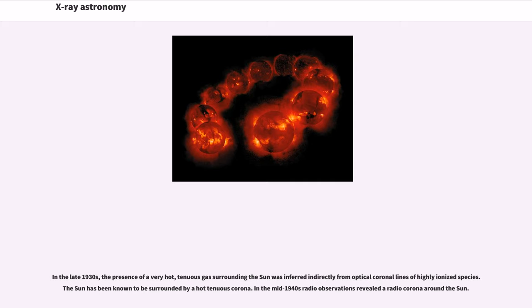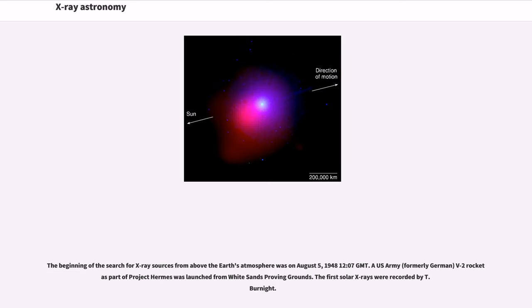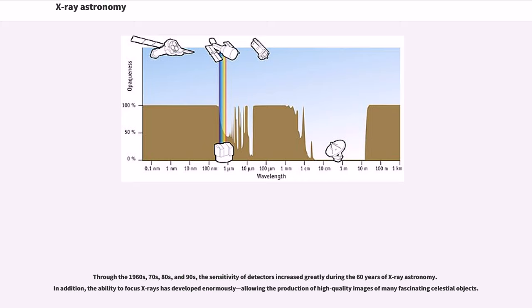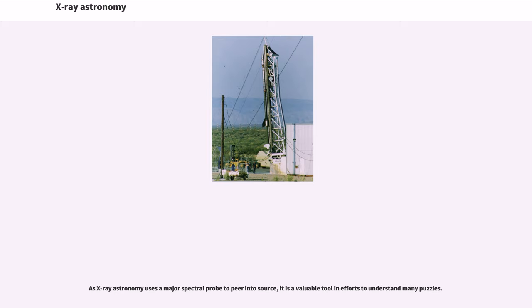In the late 1930s, the presence of a very hot, tenuous gas surrounding the Sun was inferred indirectly from optical coronal lines. The beginning of the search for X-ray sources from above the Earth's atmosphere was on August 5, 1948. A U.S. Army V-2 rocket was launched from White Sands Proving Grounds. The first solar X-rays were recorded by T. Burnight. Through the 1960s, 70s, 80s, and 90s, the sensitivity of detectors increased greatly during the 60 years of X-ray astronomy. In addition, the ability to focus X-rays has developed enormously, allowing the production of high-quality images.